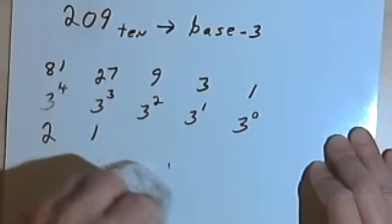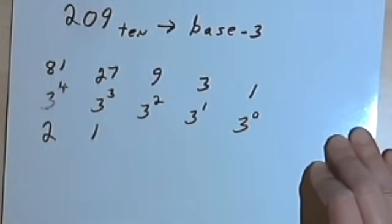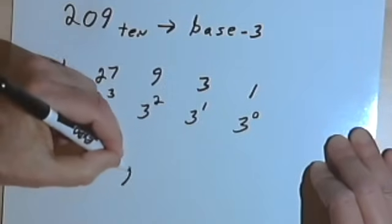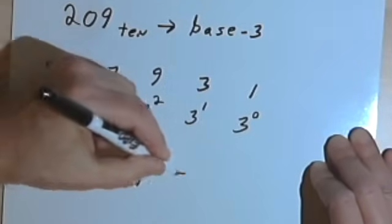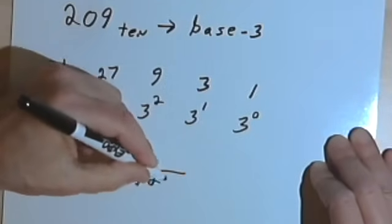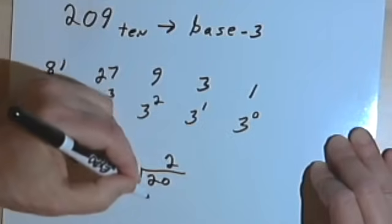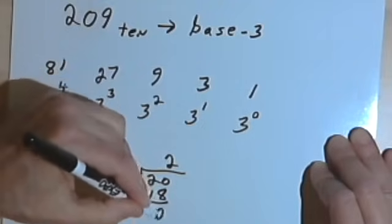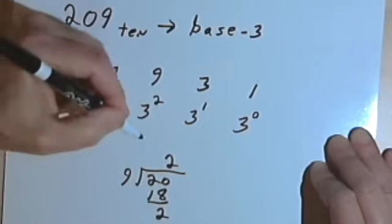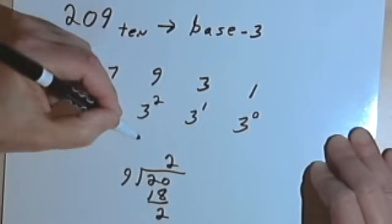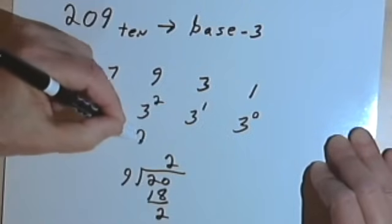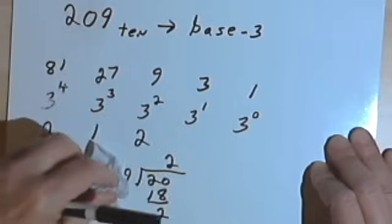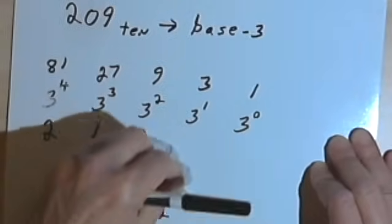I'm going to take that remainder of 20 and divide that by 3 squared, which is 9. 9 into 20 goes 2 times — 2 times 9 is 18 — and I've got a remainder of 2. So that's a 2 in the 3 squared column.